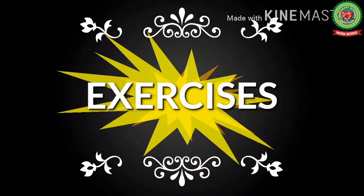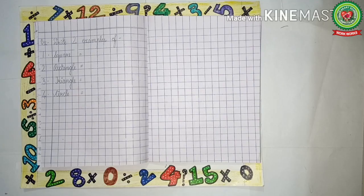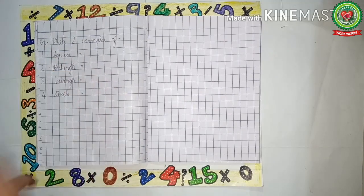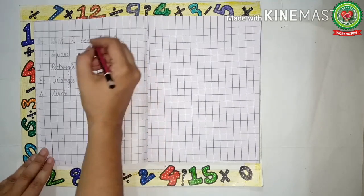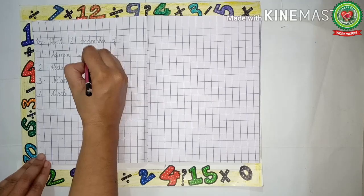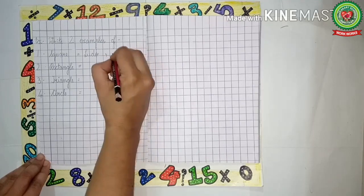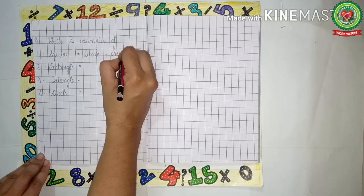Now let's practice some exercises of plane shapes. Write two examples of each shape. Number one is square. What are the two examples of square? Ludo and chess. So first we will write Ludo — L-U-D-O — comma, chess — C-H-E-S-S.